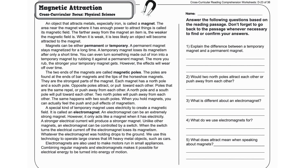The two ends of the magnets are called magnetic poles. The poles are found at the ends of bar magnets and the tips of horseshoe magnets. They are the strongest parts of the magnet. Each magnet has a north pole and a south pole.